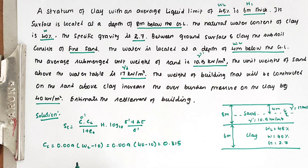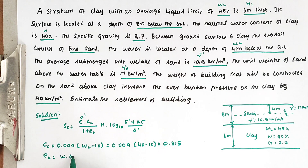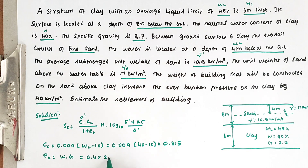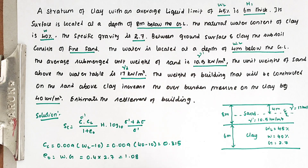Next is E₀. E₀ = W × G. The W value is 0.4 and G value is 2.7. Solving this, we get the value of 1.08.